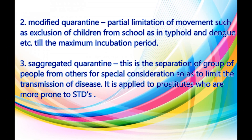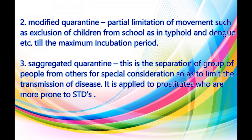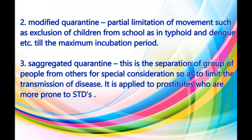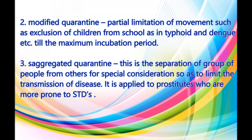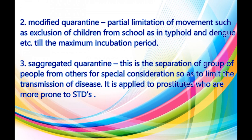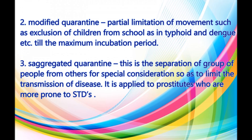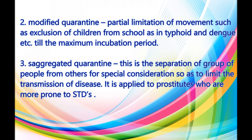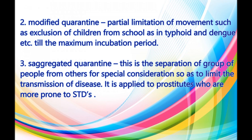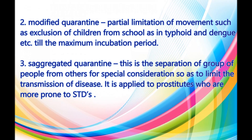Type 2 — Modified quarantine: Partial limitation of movement, such as exclusion of children from school as in typhoid and dengue, till the maximum incubation period. Type 3 — Segregated quarantine: This is the separation of a group of people from others for special consideration so as to limit the transmission of disease. It is applied to prostitutes who are prone to STDs.